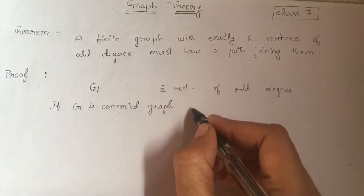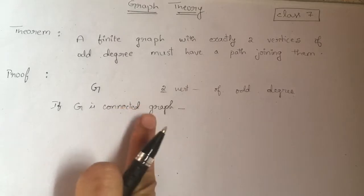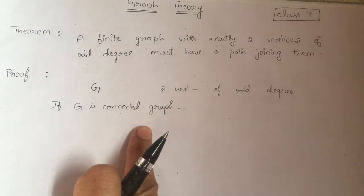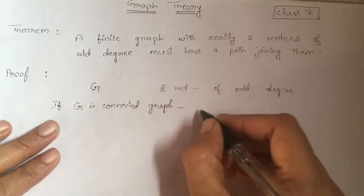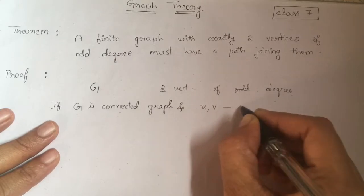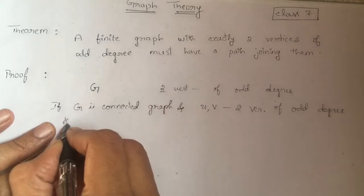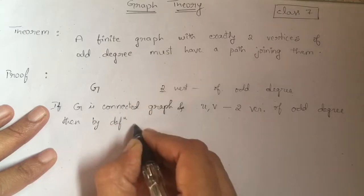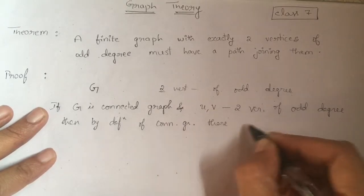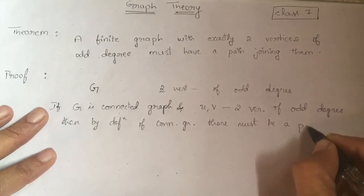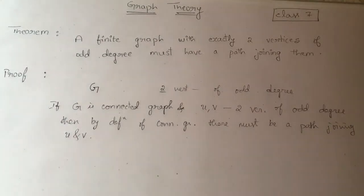If G is a connected graph, then we know by definition a connected graph means in a graph if there is at least one path between every pair of vertices, then that graph is called a connected graph. So if G is a connected graph and U and V are two vertices of odd degree, then by definition of connected graph, there must be a path joining U and V. So no problem if the graph is connected.